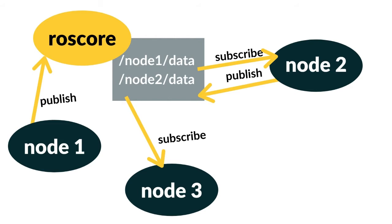When other nodes join the network, they contact ROS Core and declare what they subscribe and publish to. ROS Core facilitates the name resolution — so if node three says it subscribes to node two's data topic, ROS Core will connect node two and node three. Importantly, the information doesn't actually pass through the master, but it provides the essential service of connecting all nodes in the network and facilitating information transfer.